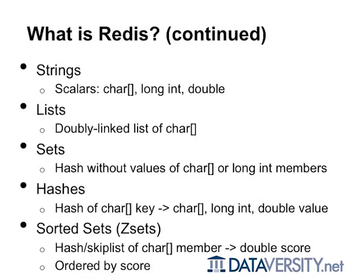Speaking of hashes, Redis also has support for hashes — generally hashes of character string to character string, long int, or double values. In a lot of ways you can see them as a smaller namespaced version of the higher-level Redis, although Redis does not support any sort of recursive structures. Right now Redis has somewhere over 100 commands. If you started adding support for nested structures that would grow even more, though you can build a sort of nested structure with namespaced keys.